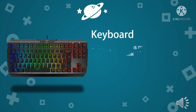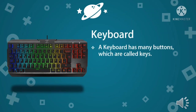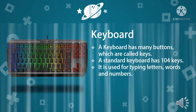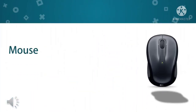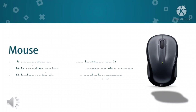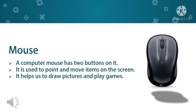Keyboard: A keyboard is made up of several small buttons called keys. Just as you use a pencil to write on paper, a computer also needs a keyboard to type any alphabet, number, etc. There are 104 keys on a standard keyboard. Mouse: A computer mouse looks like a real mouse. It has two buttons and a scroll wheel. A mouse is used for clicking and selecting files and pictures on the screen. It also helps us to draw pictures and play games.